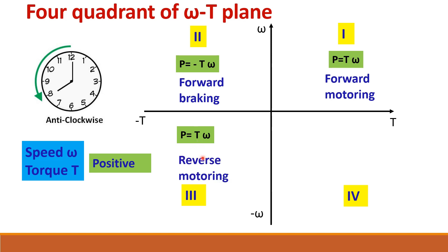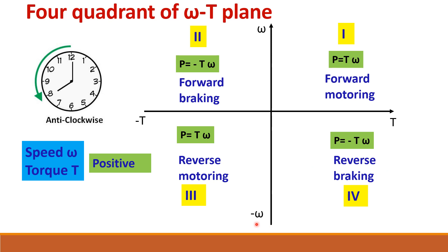In the third quadrant, speed and torque are both negative, so negative times negative gives positive power — this is motoring mode. But since speed is negative, it is reverse motoring. In the fourth quadrant, torque is positive while speed is negative, so power is negative and the speed is negative, making this reverse braking mode.